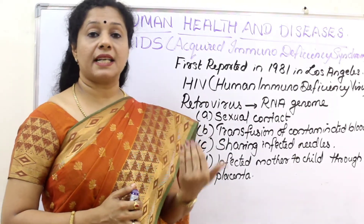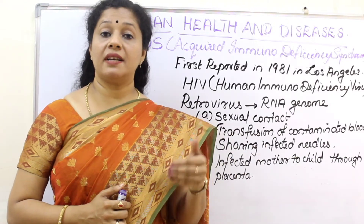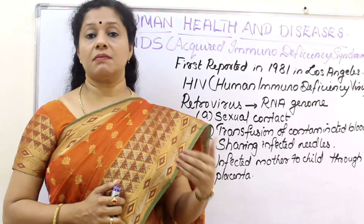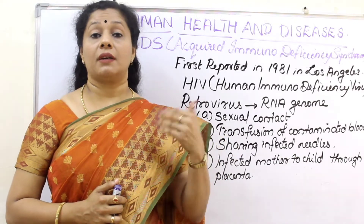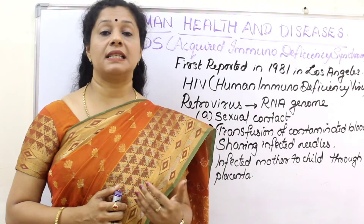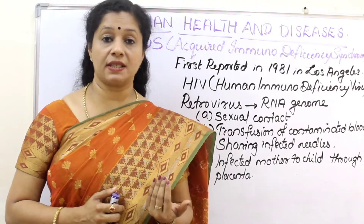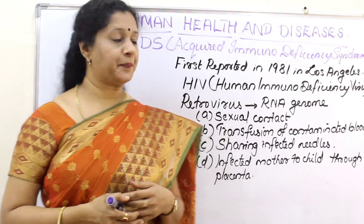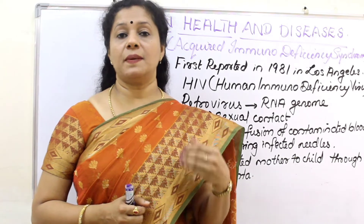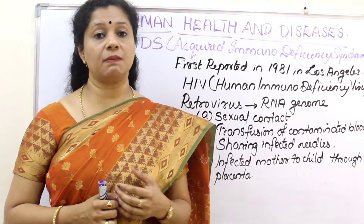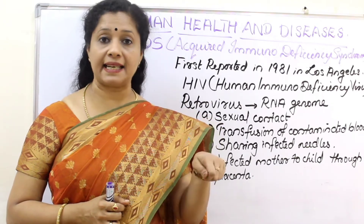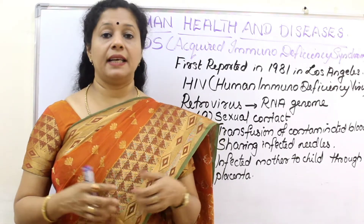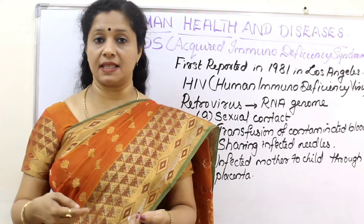Second, due to transfusion of blood — before blood transfusion, if blood is not properly monitored for the presence of HIV, there may be infection. It is risky for people who have to undergo frequent blood transfusion, such as those with thalassemia or cancer patients. Third, sharing of infected needles. In hospitals we now use disposable needles and portable incinerators. But drug abusers sharing needles in a group may spread HIV infection among themselves.